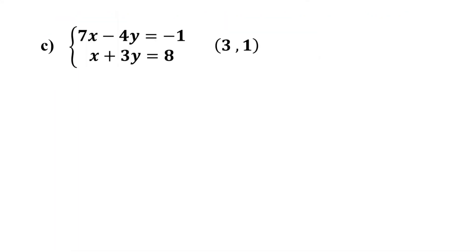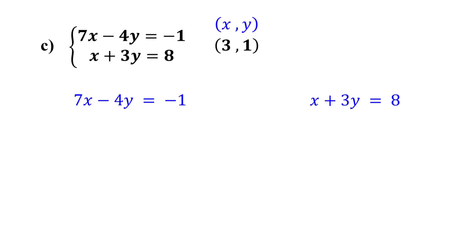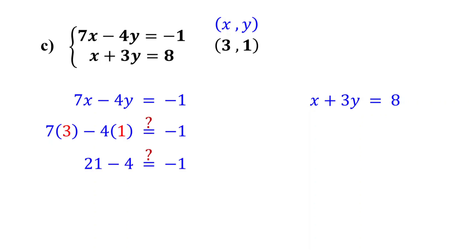Is the ordered pair (3, 1) a solution to this system of equations? Feel free to pause the video and work on it. The x value is 3 and the y value is 1. Plug in 3 for x and 1 for y. 7 times 3 equals 21 and 4 times 1 equals 4. 21 minus 4 equals 17. However, 17 is not equal to negative 1, so the ordered pair does not satisfy the first equation. At this point, there is no need to check the second equation since it already fails to satisfy the first equation.